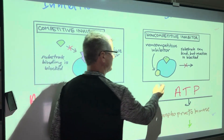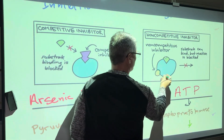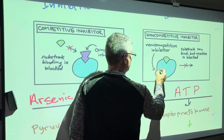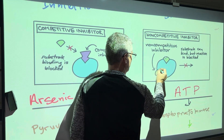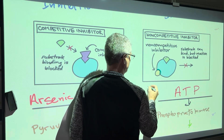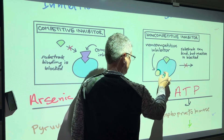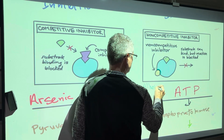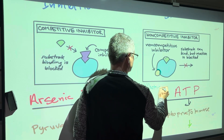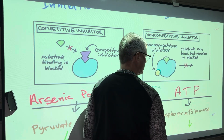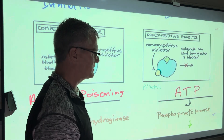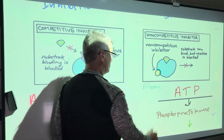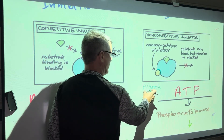The site where that inhibitor attaches is called an allosteric site. 'Allo' means different — basically a different site. So that's the allosteric site right there.